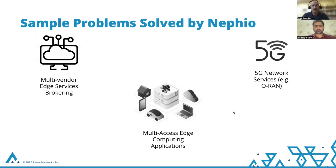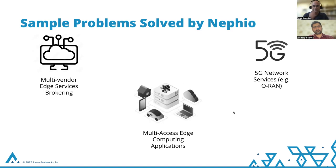What type of problems can NEPheo solve? These are just three examples — there's no limit to what type of edge applications you can use NEPheo for. The first is multi-vendor edge services brokering, where a telco may want to be a single point of contact for enterprises and provide edge from different vendors as needed. For example, if somebody says they want an edge that is five milliseconds from a certain location, the telco automatically finds the right edge and provides a brokering service. The second is multi-access edge computing for general purpose edge applications. The third is for 5G network services, for example, OpenRAN.